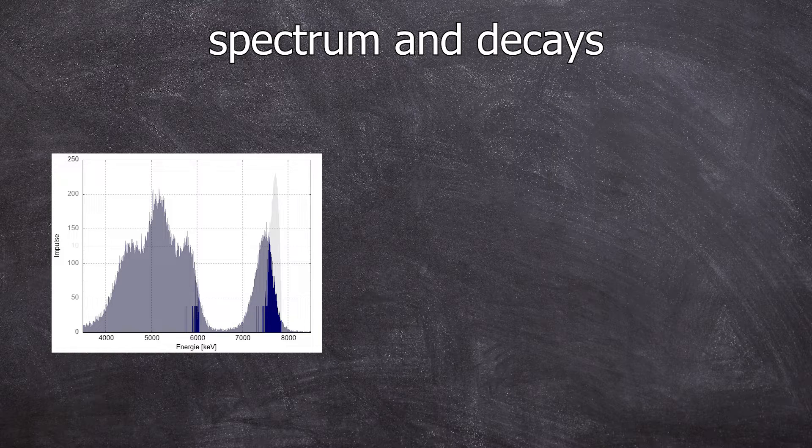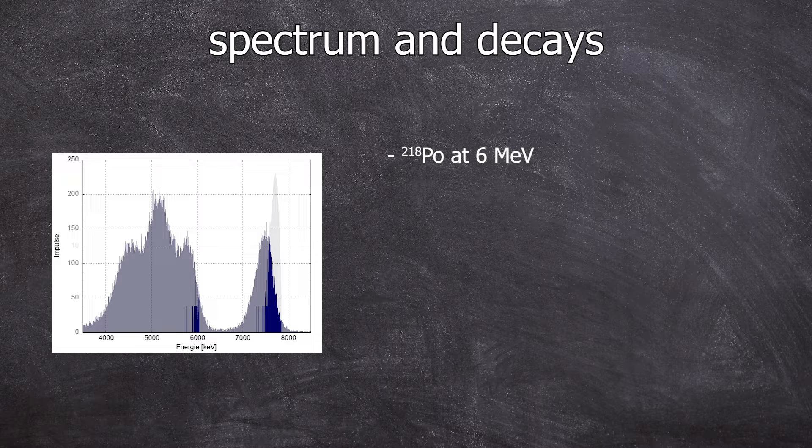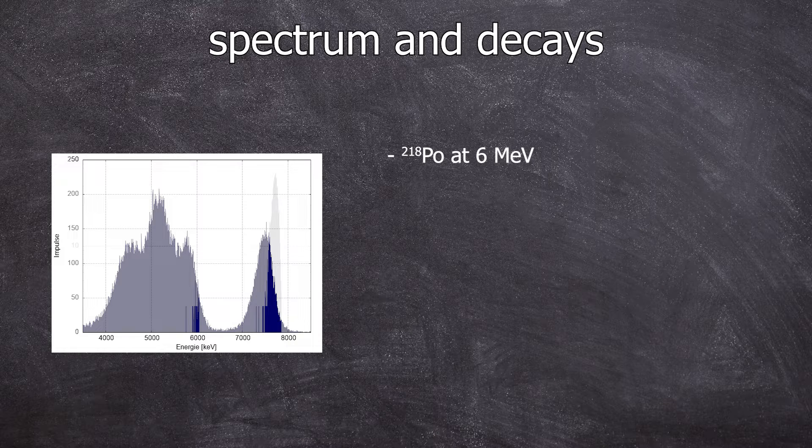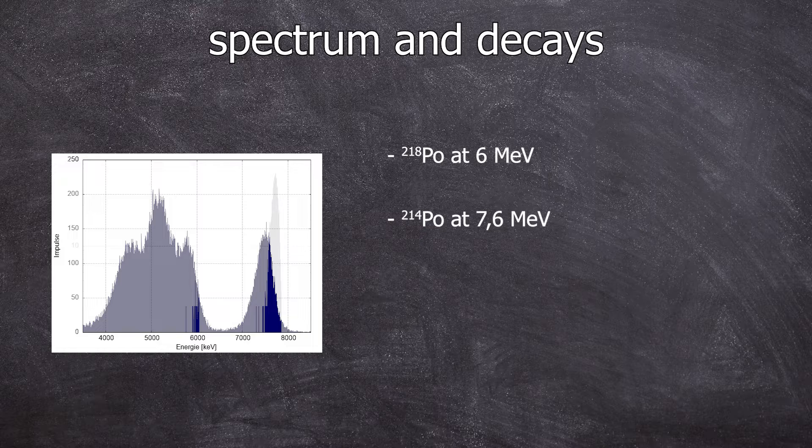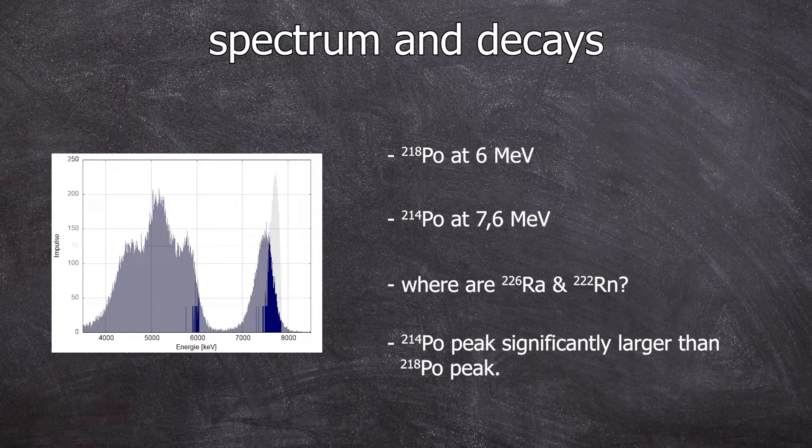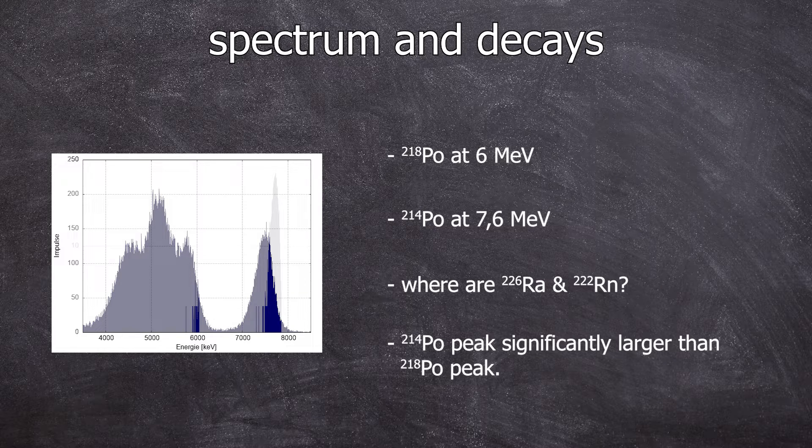These two signals should look familiar. It's polonium 218 at 6 mega electron volts and polonium 214 at 7.6 mega electron volts. But here you can clearly see differences. Two radionuclides are missing and the polonium 214 peak is much larger in comparison. Now we gotta figure out why.